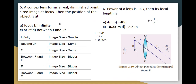A convex lens is used to form a real image that is diminished to a point size — meaning the image is shorter than the object. A small-sized image is formed, and the image position is at infinity. So the answer is infinity.